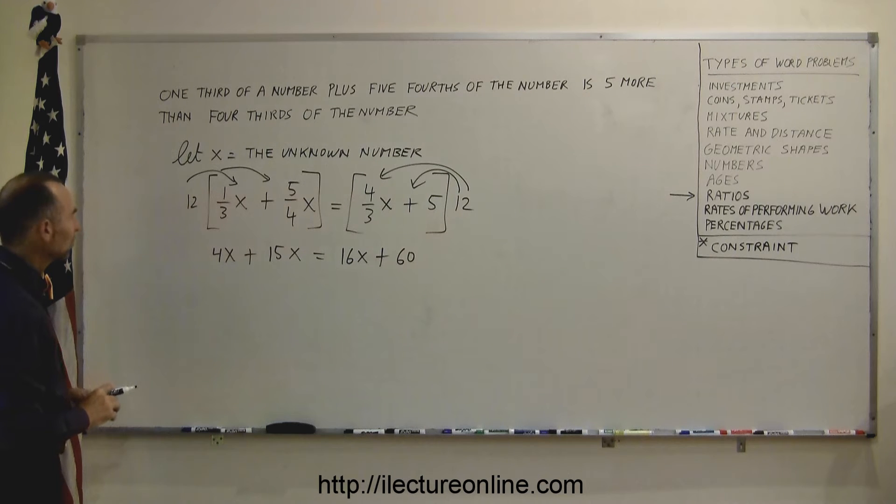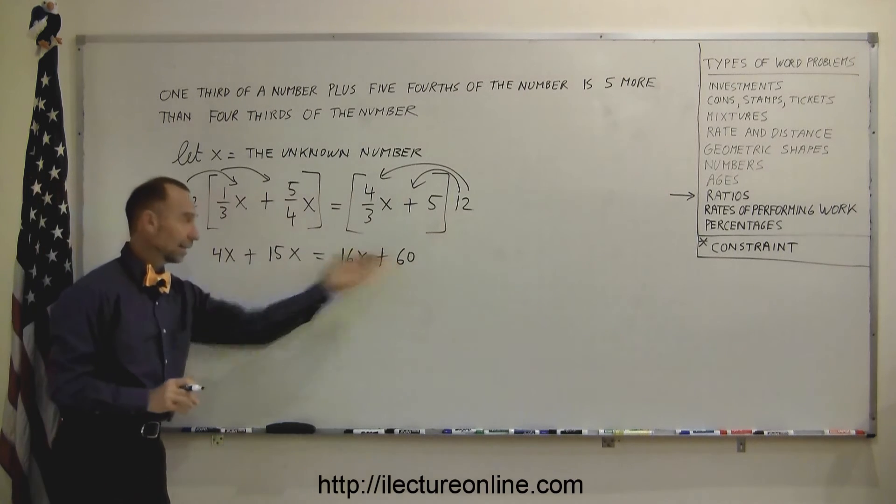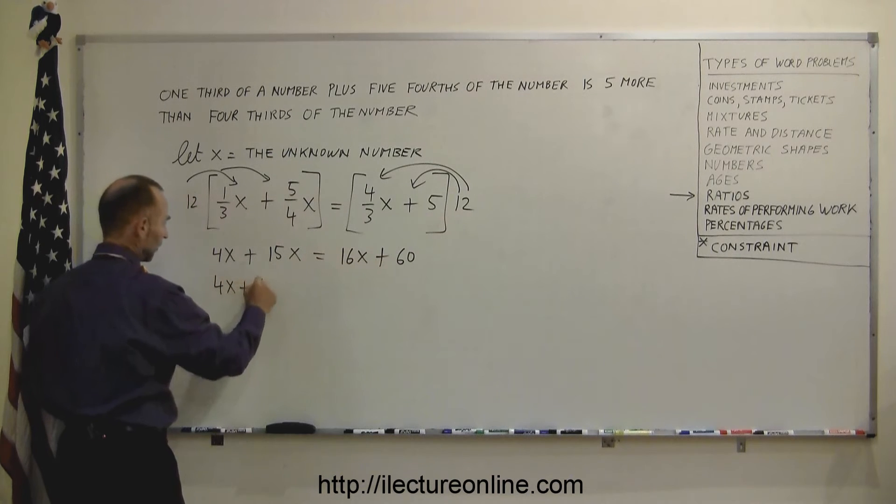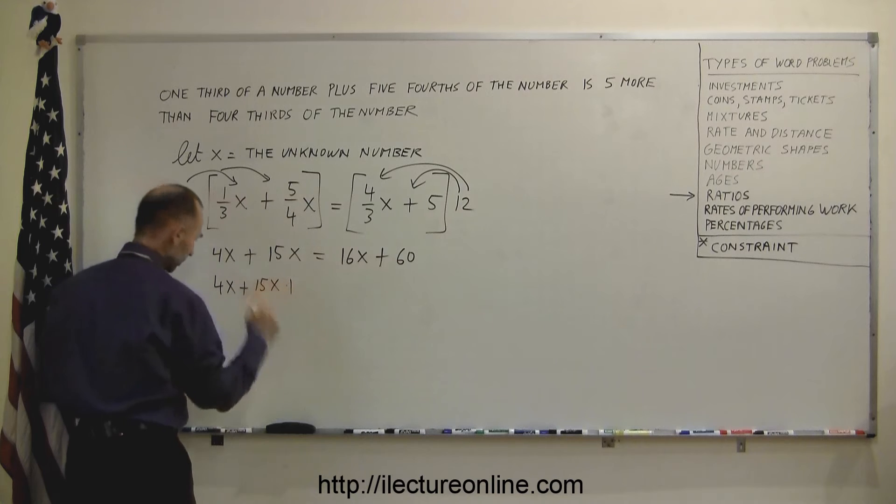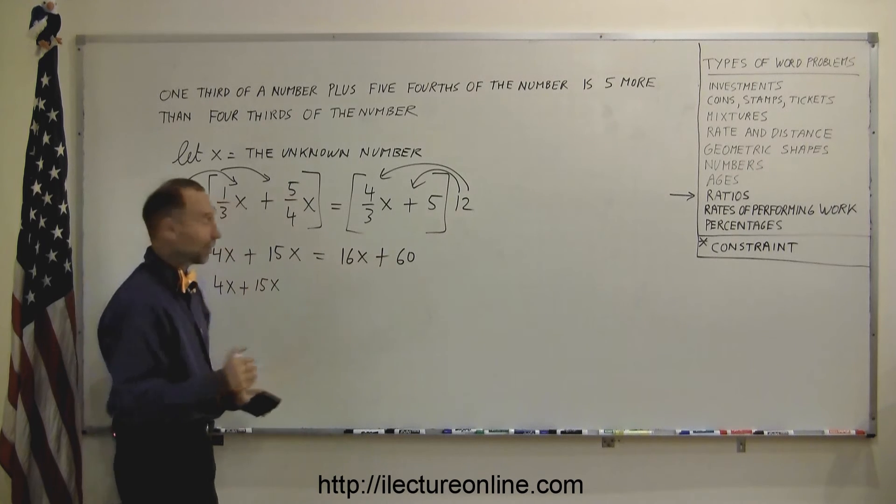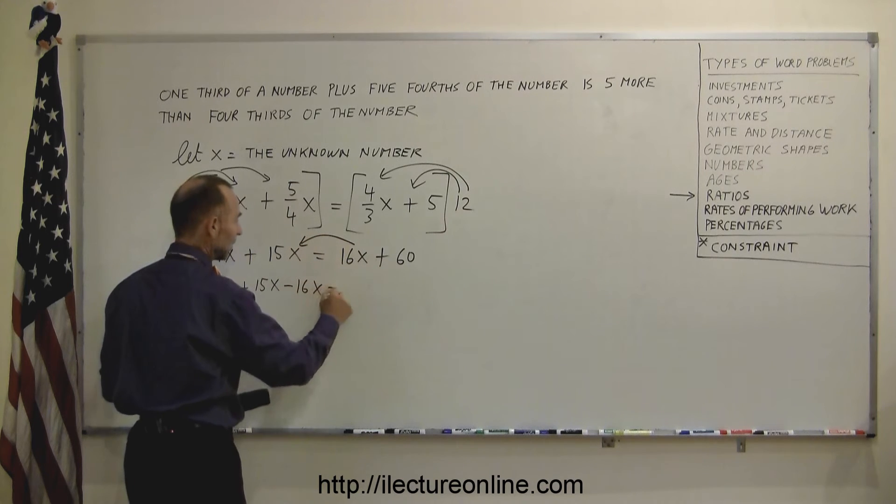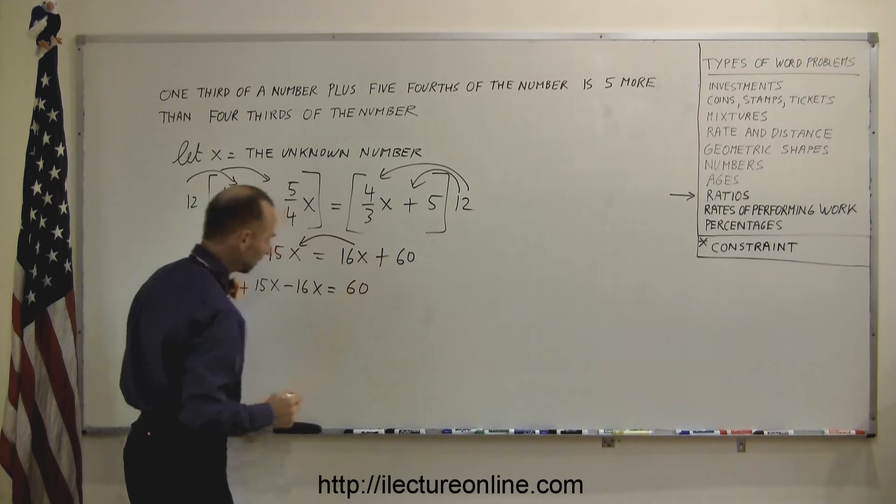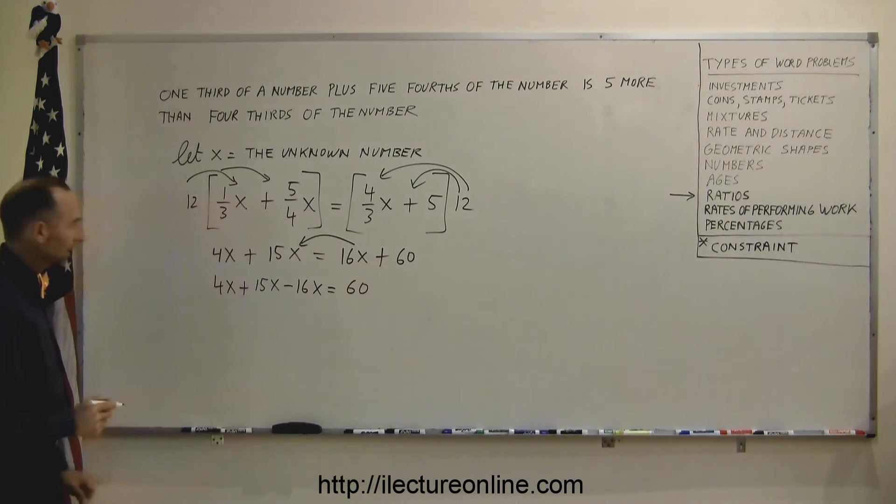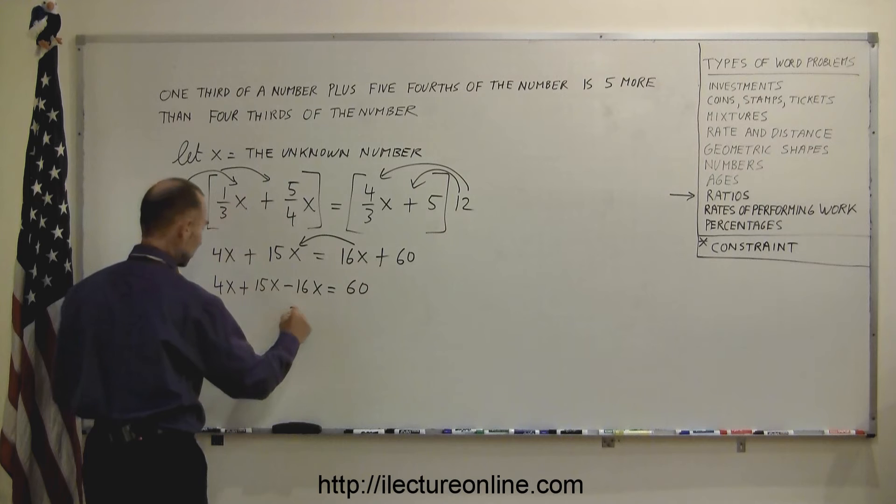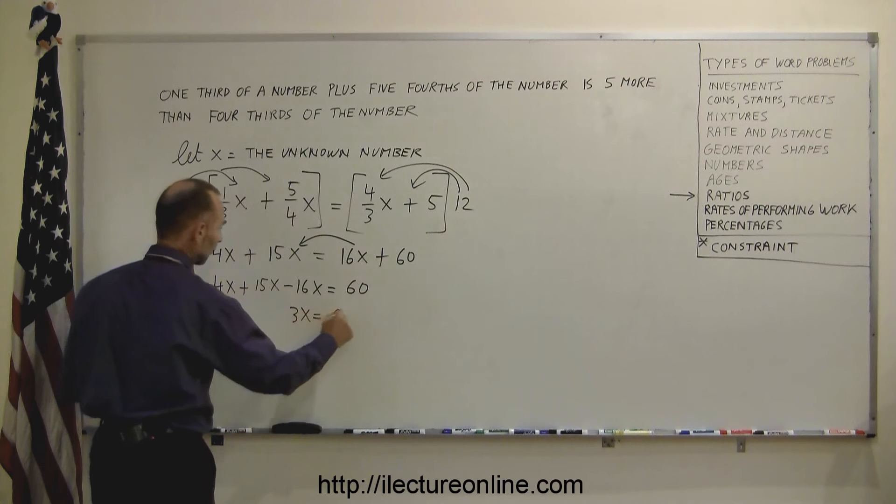The next thing we want to do is move all the terms with an x to one side, leave everything else on the other side, so this becomes 4x plus 15x, plus... not plus, I almost made that mistake. Remember, whenever you cross the equal sign, you have to change the sign, so that it becomes minus 16x, equals, and we have a 60 on the right side. Now we have to combine like terms. So 15x minus 16x is minus 1x. Subtract from 4x, that gives me a 3x, equals 60.